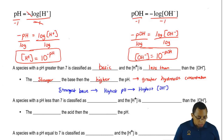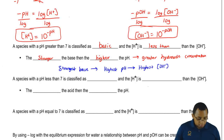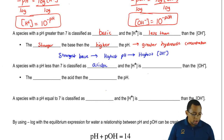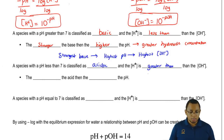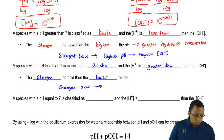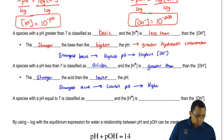A species with a pH less than 7 is termed acidic. If you're acidic, your H-plus concentration is greater than your OH-minus concentration. We can say the stronger the acid, the lower the pH. So the strongest acid has the lowest pH, which means you have the highest H-plus concentration.